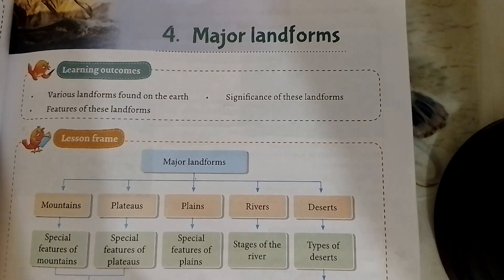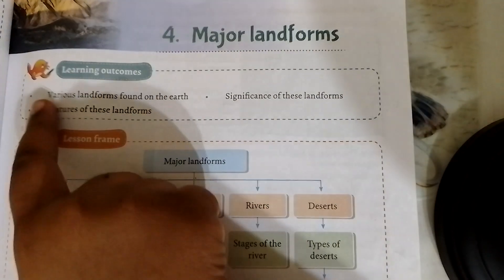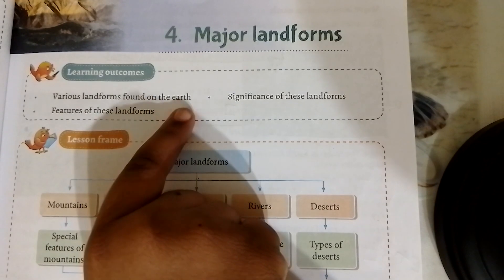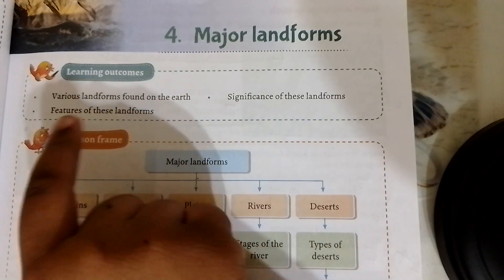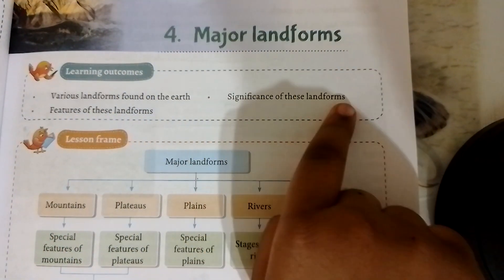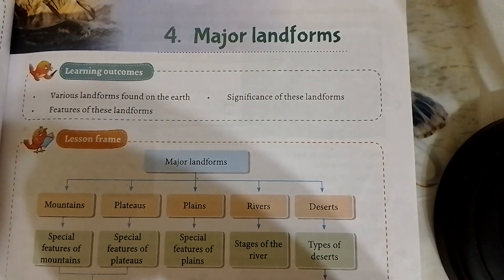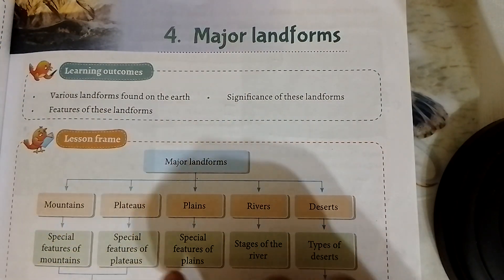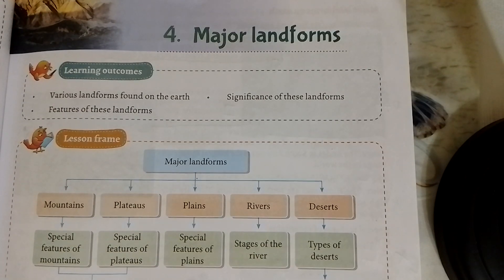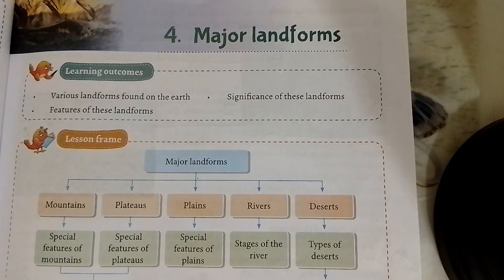We are going to learn major landforms, Chapter 4 from SST. Today we are going to learn various landforms found on the earth, features of these landforms, significance of these landforms, and which are the major landforms found on earth.